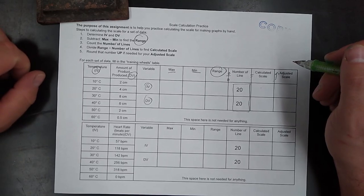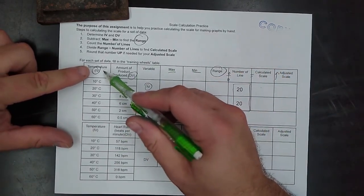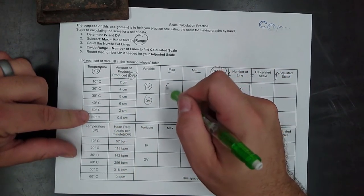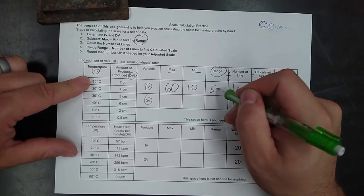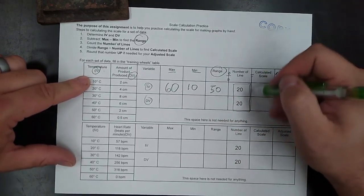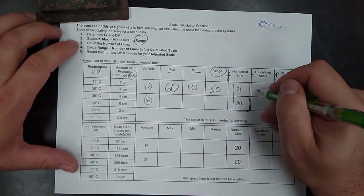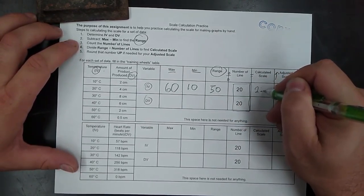So, for example, for your independent variable for this one, we've got 60 as our biggest, 10 as our smallest. 60 minus 10 is 50. 50 divided by 20 is the same as 5 divided by 2, so that's 2.5.